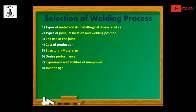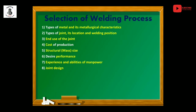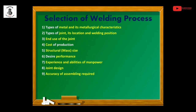The eighth factor is joint design. This depends upon the geometry and strength of the weld. It could be single side, double side, single fillet, or double fillet, according to the geometry requirements. Different joint designs have different complexity levels, and this complexity also influences the selection of the welding process.